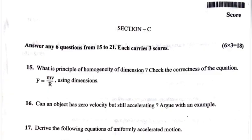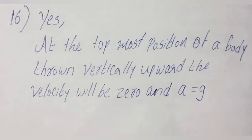Question 16: Can an object have zero velocity but still accelerating? Argue with an example. Answer: Yes. At the topmost position of a body thrown vertically upward, the velocity will be zero and the acceleration will be g.